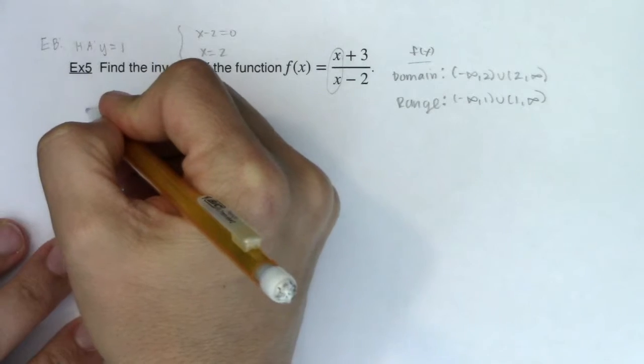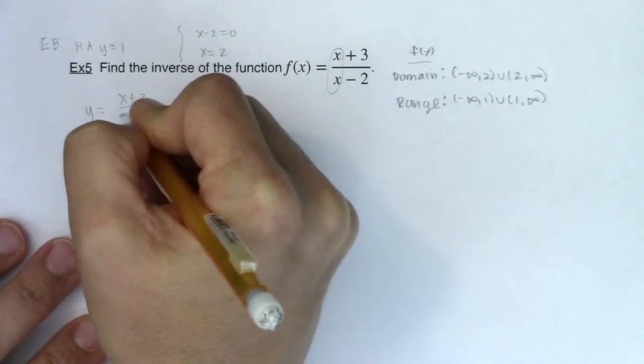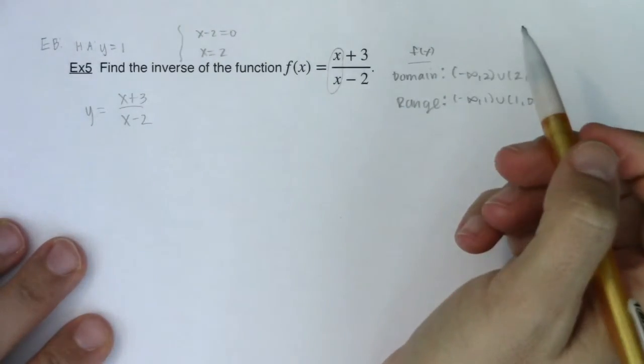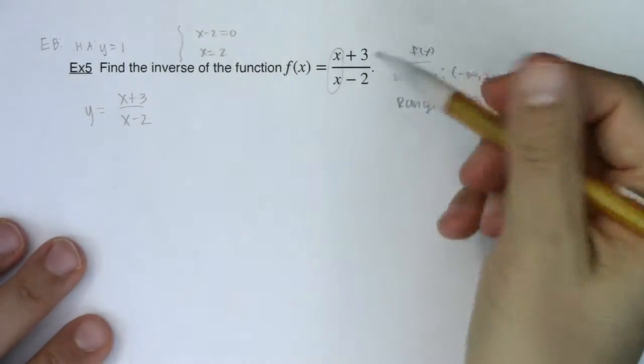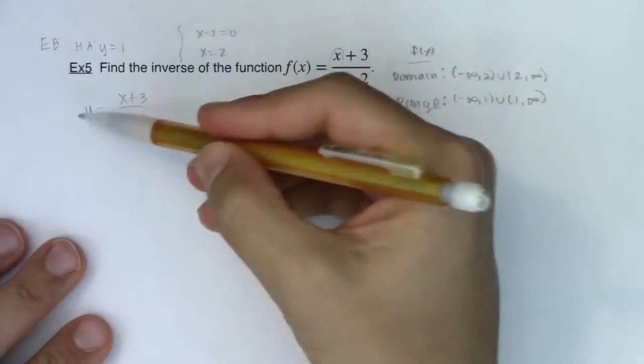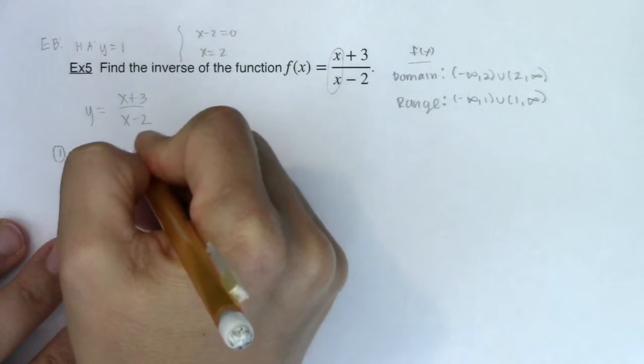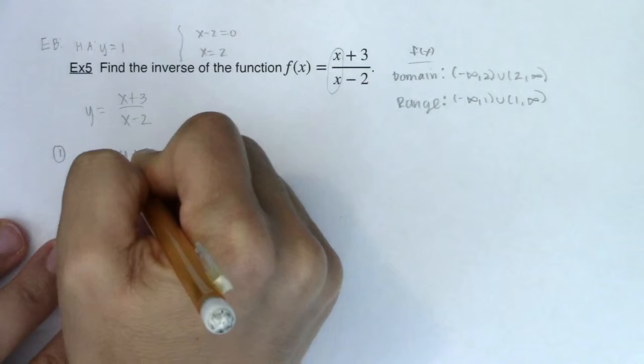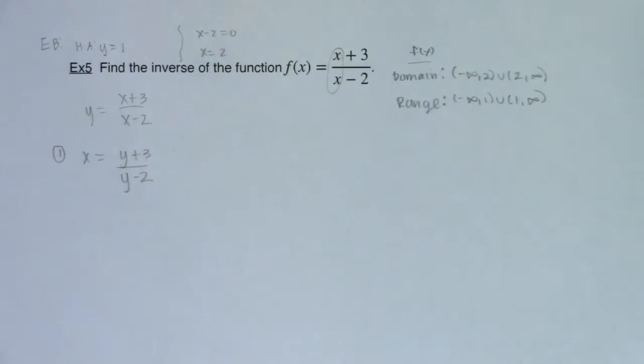And then let's do it. So my function is, do we have x plus 3 over x minus 2. And step 1 is always to replace the y's with the x's and the x's with the y's. So these two are going to become y's. Even though this is function notation, that is my y, right? So I'm going to write an x. So here we go.